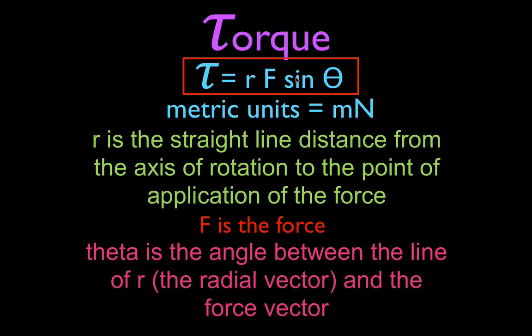To calculate torque, you just multiply R, F, and sine theta — there's no reason to use the cosine, just R·F·sin(θ). The metric units for torque: we're multiplying a distance times a force, so the units are meter-newton. Sometimes people write that as newton-meter and think it's a joule, but joules are units for energy and work. This is torque, so we cannot write it as a joule — you can write meter-newton or newton-meter, but not joule.